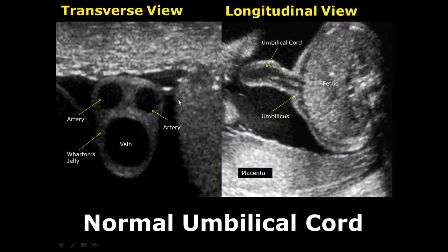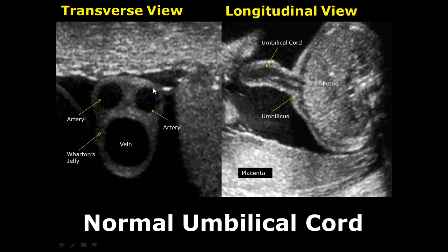The umbilical cord connects the placenta to the fetus and provides blood supply. Here we can see a cross section of the umbilical cord in the transverse view. The one with the larger diameter is the umbilical vein, and these two with smaller diameters are the umbilical arteries — so we have two arteries and one vein. The umbilical cord is protected by a substance known as Wharton's jelly.